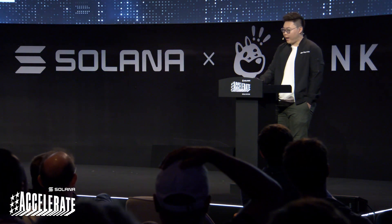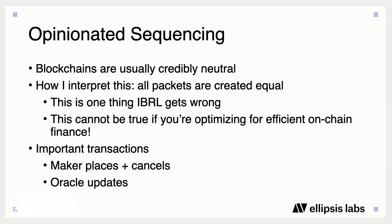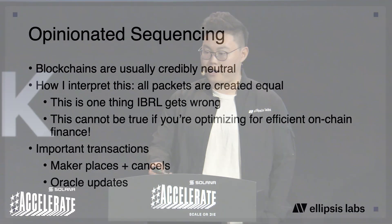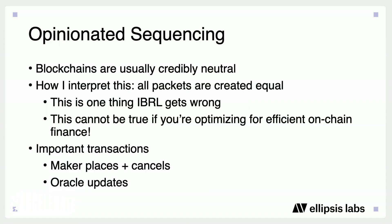The second way that Atlas scales the SVM is through the write layer, via opinionated sequencing. In general, blockchains are known to be credibly neutral — treating all packets and transactions as equal. I think this is where the IBRL folks get it wrong, because you can't optimize for efficient on-chain finance if you don't discriminate on packets or transactions. Opinionated sequencing means some transactions are more important than others. Market makers cancelling and placing quotes should take precedence over toxic takers crossing the spread. When you protect these liquidity providers, it lowers costs for all users and produces a positive externality for the platform.